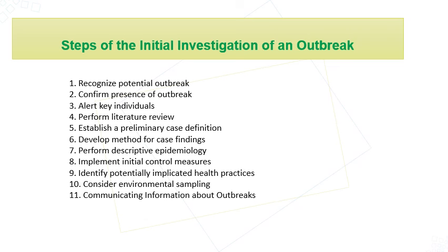Now we will talk about the steps of the initial investigation of an outbreak. There are 11 steps: recognizing a potential outbreak; confirming the presence of an outbreak; alerting key individuals and performing a literature review; establishing a preliminary case definition; developing methodology for case finding; performing descriptive epidemiology; implementing initial control measures; identifying potentially implicated health practices; environmental sampling; and communicating information about the outbreak. We will explain each step.